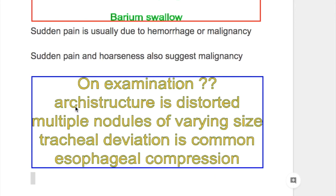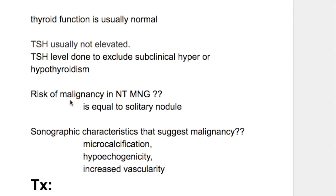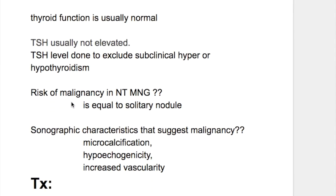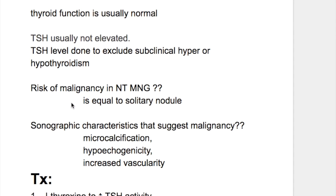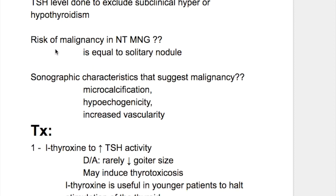On examination, the architecture is distorted and multiple nodules of varying size are felt. Tracheal deviation is common, along with esophageal compression. Thyroid function is usually normal. TSH is not elevated but is measured to exclude subclinical hyper- or hypothyroidism.